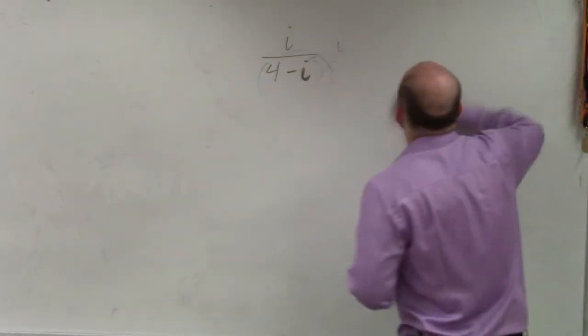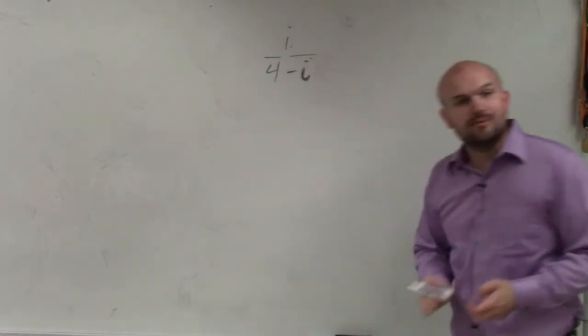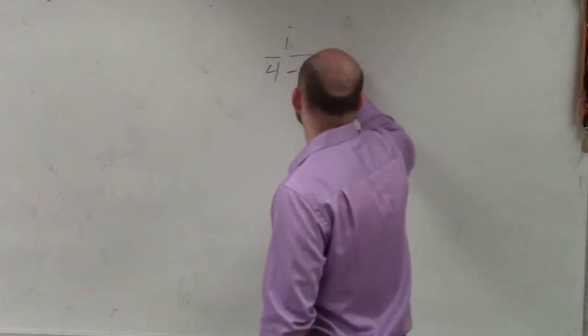So to avoid this, instead of multiplying by i like the last example, what we need to do is multiply by the conjugate, which is 4 plus i.